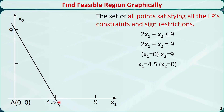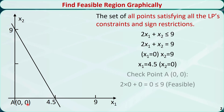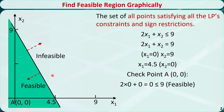Now let's check which side is feasible. We can pick a point A at (0, 0) and plug it into the left-hand side: 2 times 0 plus 0 is equal to 0, which is less than or equal to 9. Therefore, point A is feasible, so this entire side is feasible and the other side is infeasible. Because this is a less than or equal to sign, the line itself is also in the feasible region.